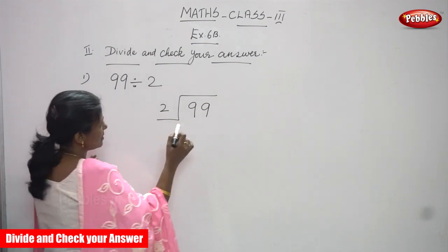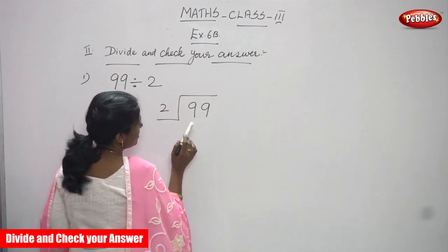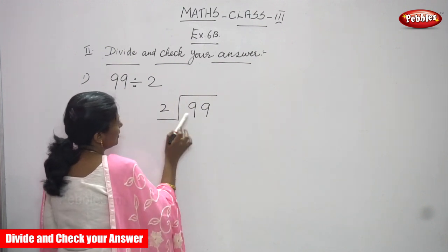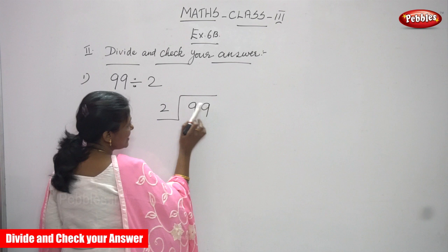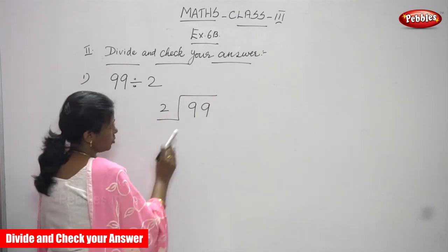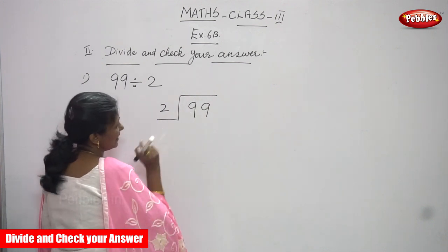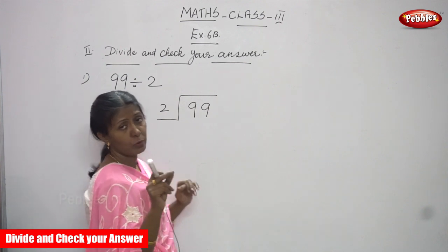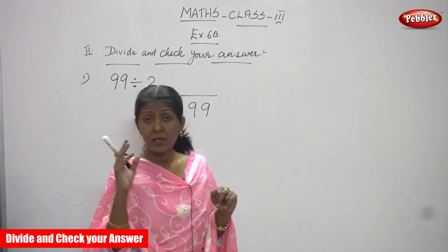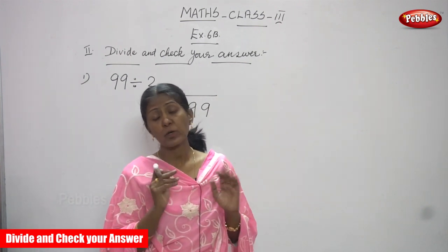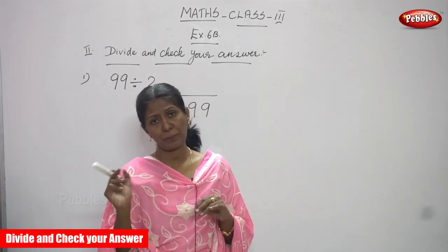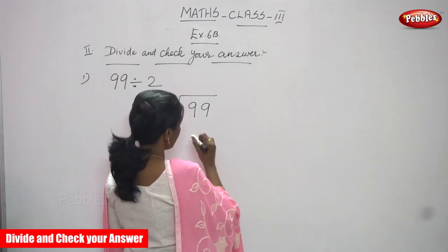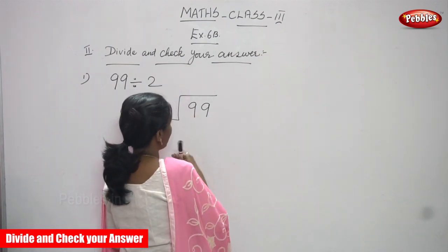First, this is the 10s place and this is the 1s place. So we have 9 tens and 9 ones. So 99 is going to be divided by 2. First you must take the 10s place value — you have to see only the number, not the place value. So what is the number in the 10s place? That is 9.